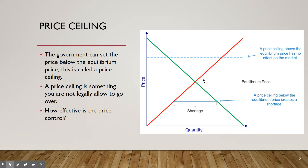One kind of price control is called a price ceiling. A price ceiling is a price that you cannot legally go over. Depending on where it falls, if it's below the equilibrium, it's going to create an artificial shortage. It is possible that the government sets the price ceiling above the equilibrium, which means it's not actually going to affect the market itself.